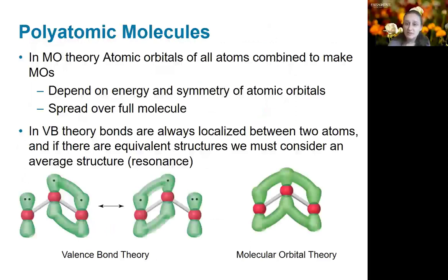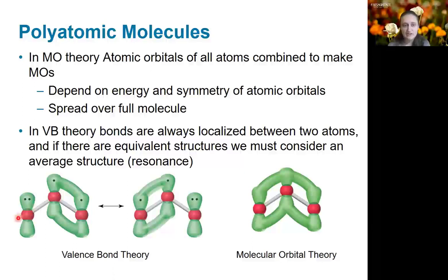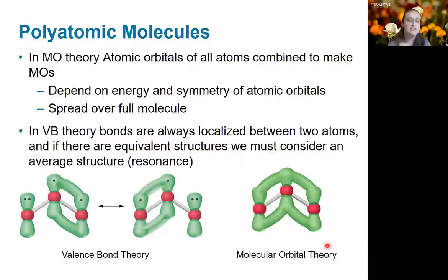Both valence bond and molecular orbital theory can be expanded to include additional atoms. In the valence bond model, bonds are always between two atoms, while in the molecular orbital theory model, they can spread out over the whole molecule. The case of ozone illustrates the difference in these models. In valence bond theory, we have to think about this molecule as an average structure involving one single bond and one double bond — this concept is called resonance. In molecular orbital theory, there's no need for these separate structures, as the pi orbital can actually spread out over the whole molecule, in this case all three atoms. We would call this a delocalized bond, as the electrons in this pi orbital are able to spread out over all the atoms and are not stuck just in between two.